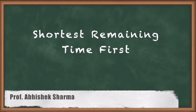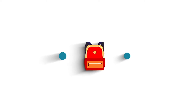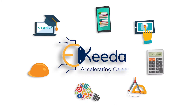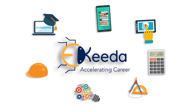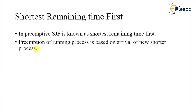Hello friends. In today's class we are going to talk about the Shortest Remaining Time First scheduling algorithm, which is SJF with preemption. We have already seen Shortest Job First without preemption, but here we are going to preempt our schedule, and that is called Shortest Remaining Time First.